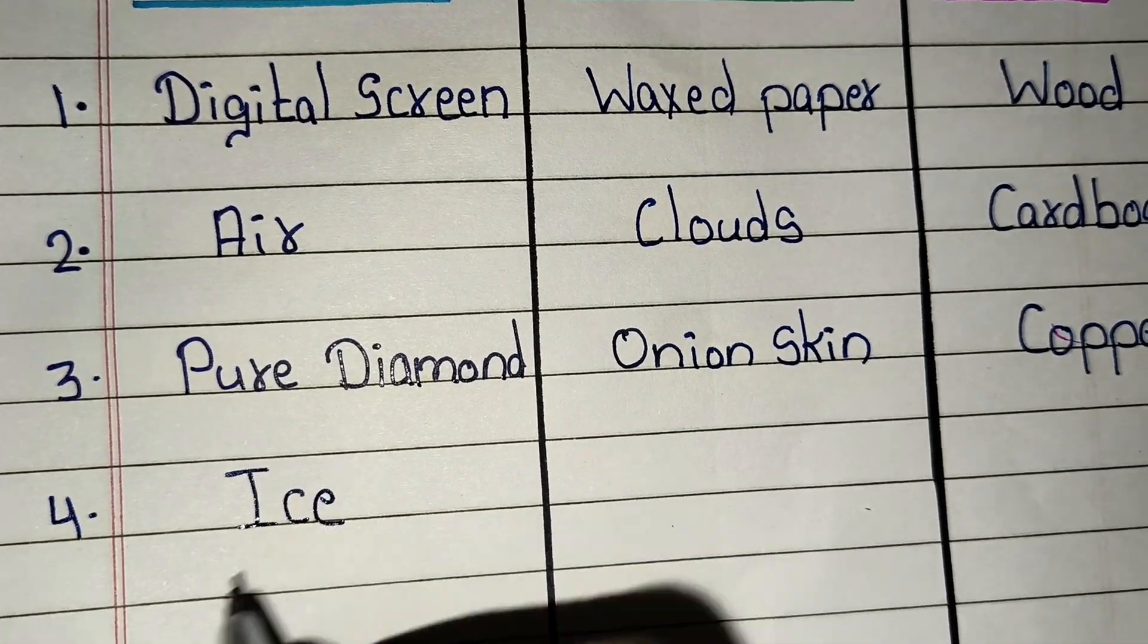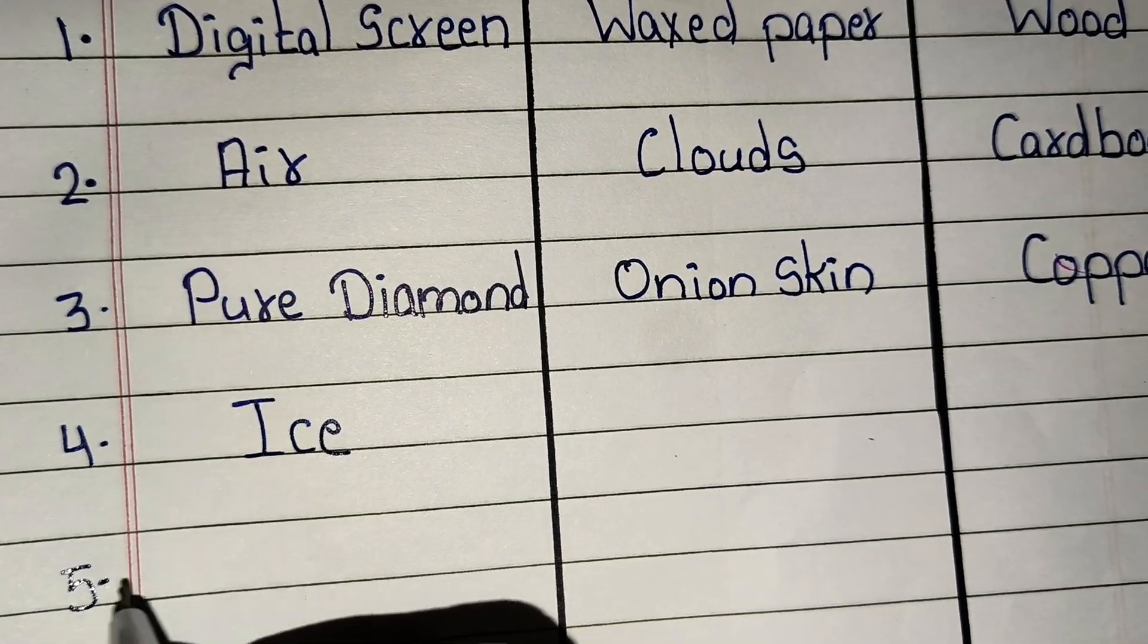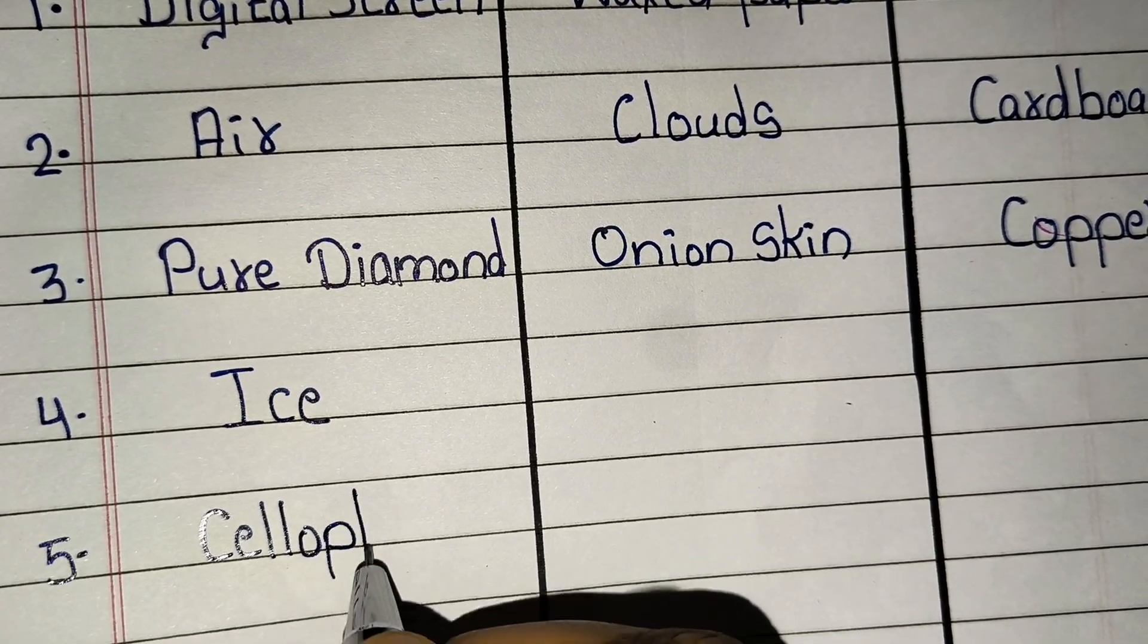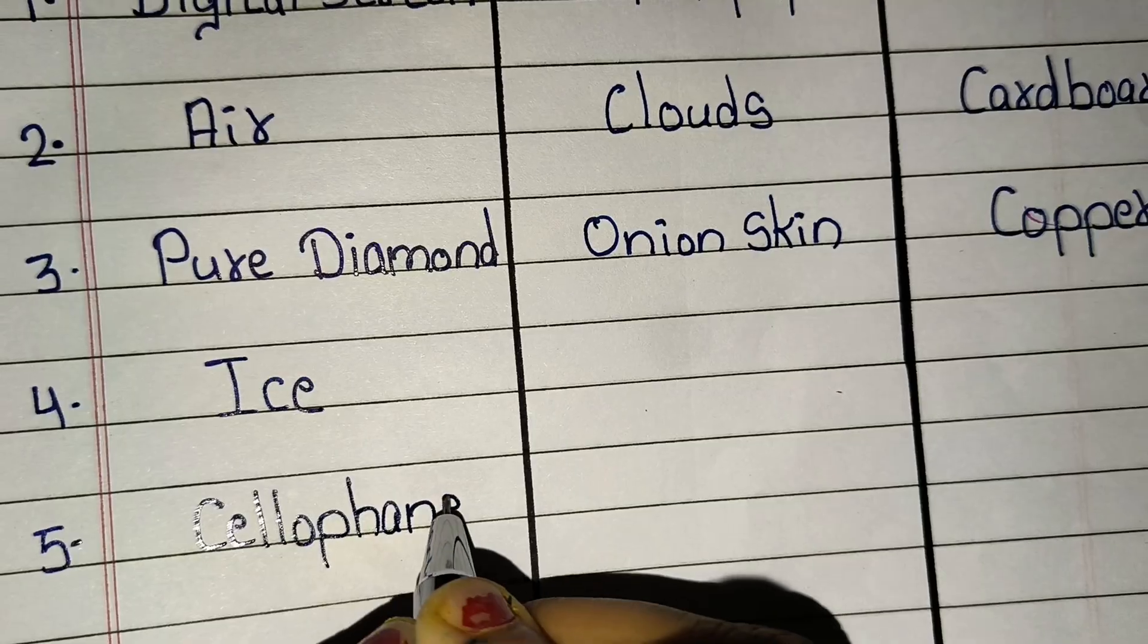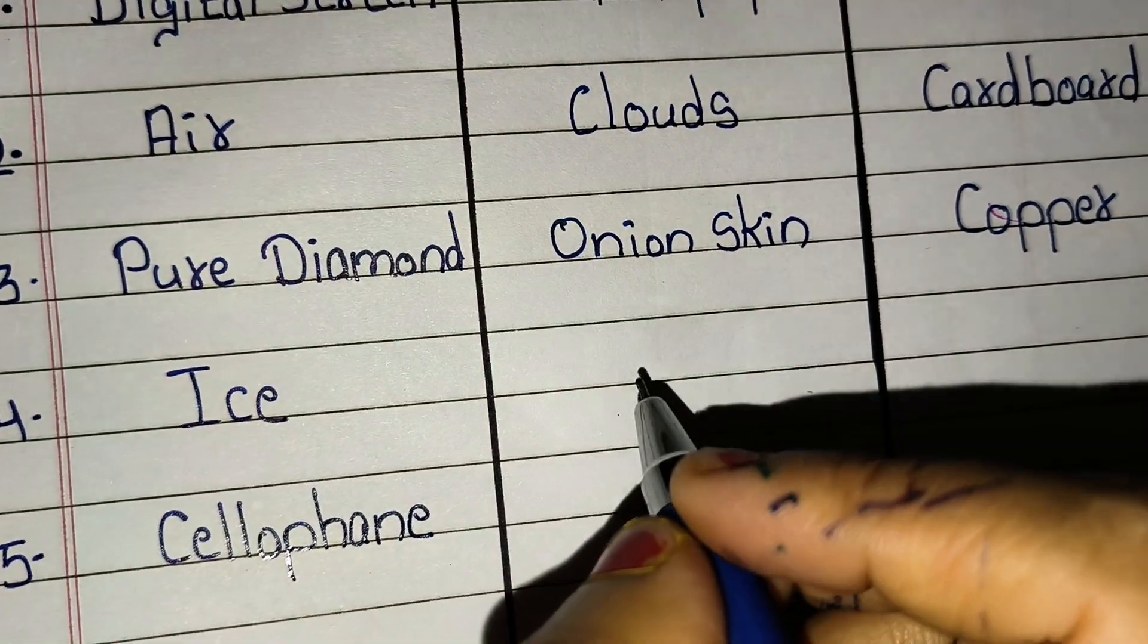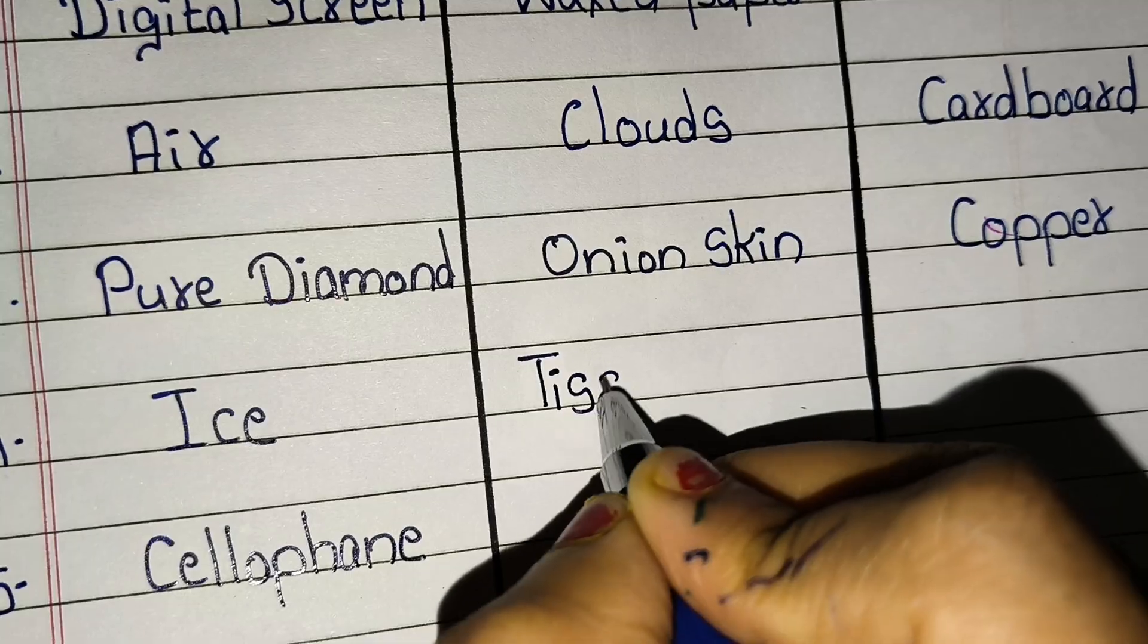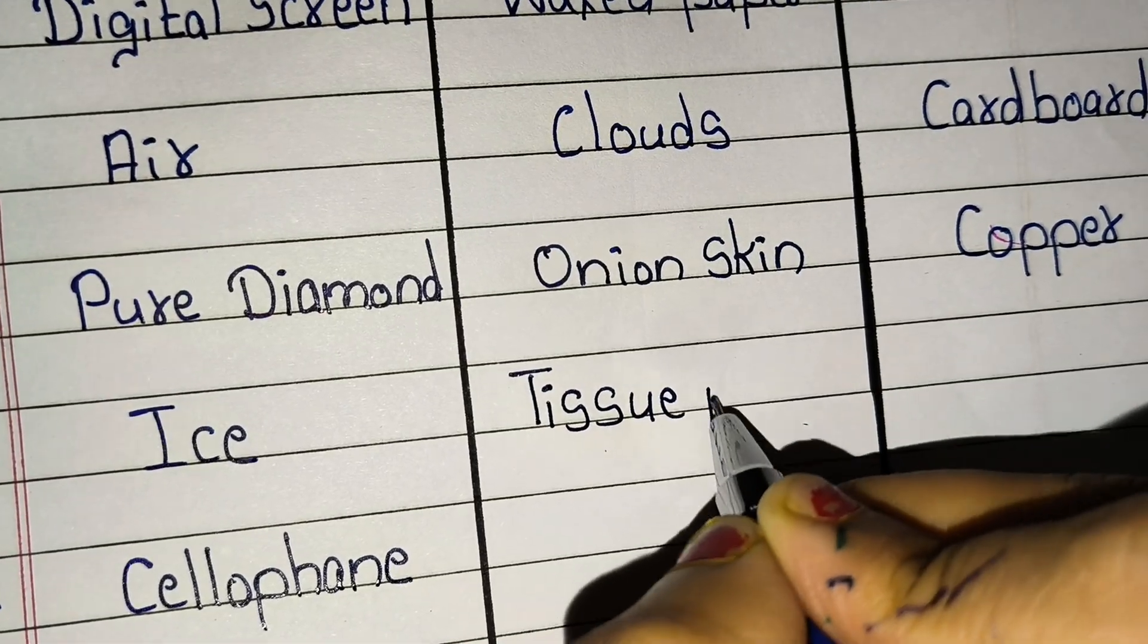Again, example of transparent: ice. Example of translucent: cellophane, tissue paper.